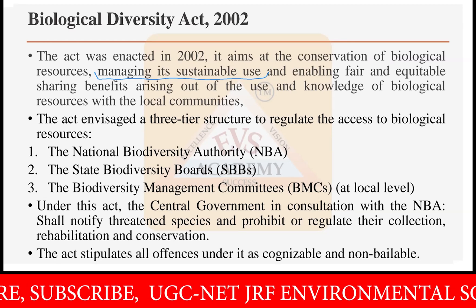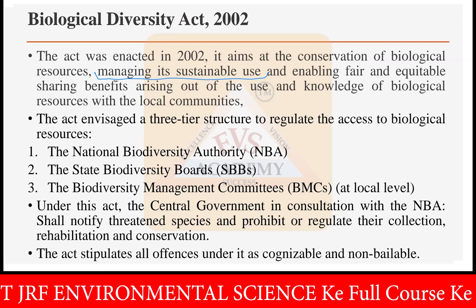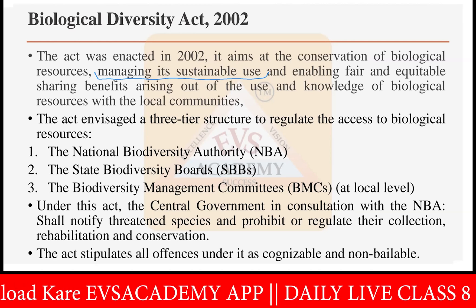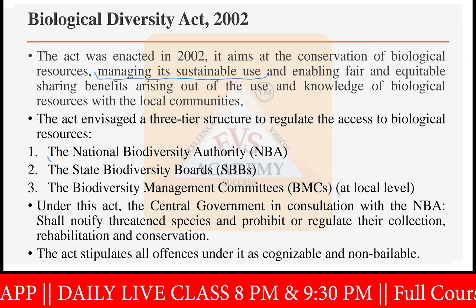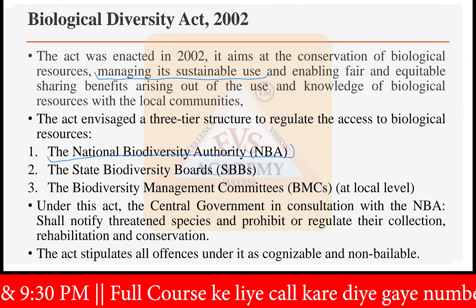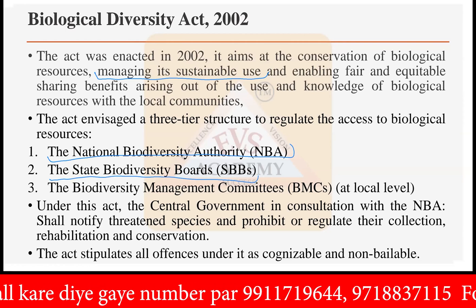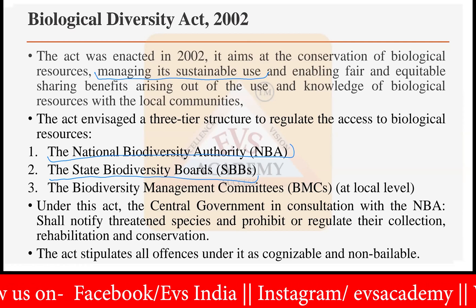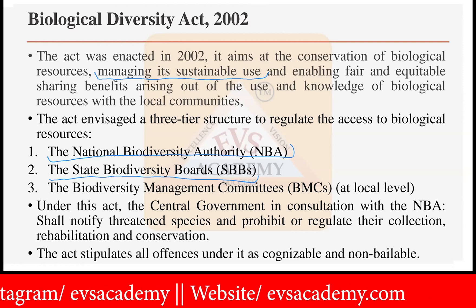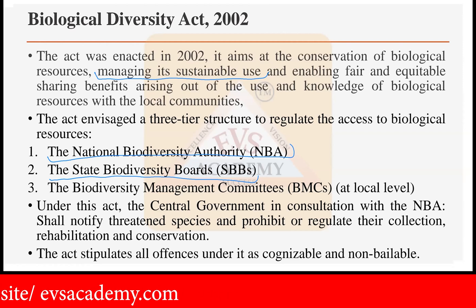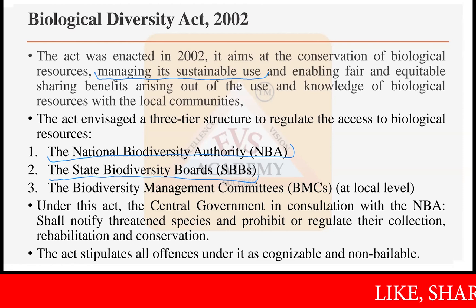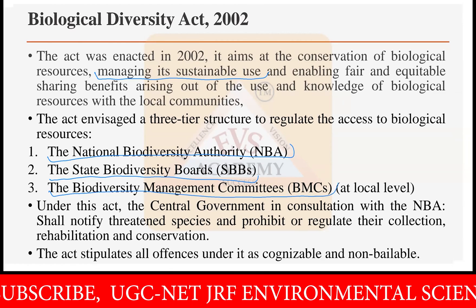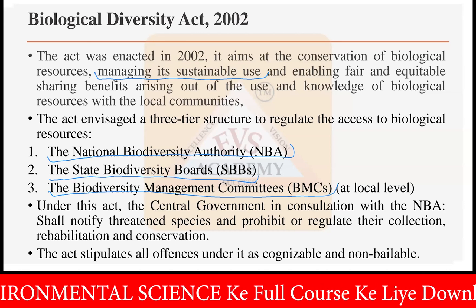The Biological Diversity Act of 2002 envisages three bodies to regulate access to biological resources. The first body is the National Biodiversity Authority (NBA), which is a central government body. The second is the State Biodiversity Board, governed by all state governments in their respective areas. The third body is the Biodiversity Management Committees (BMCs), which work at the regional or local level near any district headquarter, block area, or villages, securing biological diversity present in that particular area.